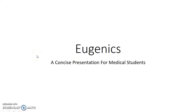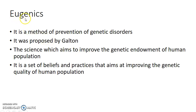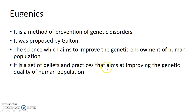Hello guys, this is Indian Medico and in this video we are going to see about eugenics — a concise presentation for medical students. The term 'eu' means good and 'genics' means born, so eugenics literally means born good. Eugenics is a method of prevention of genetic disorders. The term was proposed by Galton, who used it to refer to the science which aims to improve the genetic endowment of the human population.